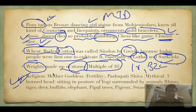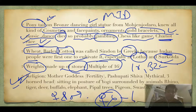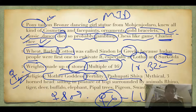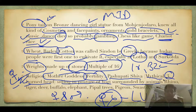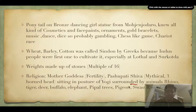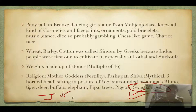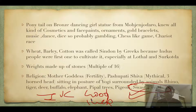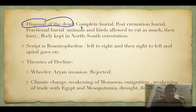Religion is extremely important. Both female and male gods were present — unlike the later Vedic period which had no female gods. The Mother Goddess was most important as a goddess of fertility. Pashupati Shiva is depicted as a mythical beast with a three-horned head, sitting in the posture of a yogi, surrounded by animals like rhino, tiger, deer, buffalo, and elephant. They also worshipped pipal trees, pigeon, and the Swastika symbol — first found in IVC as a symbol of good luck.